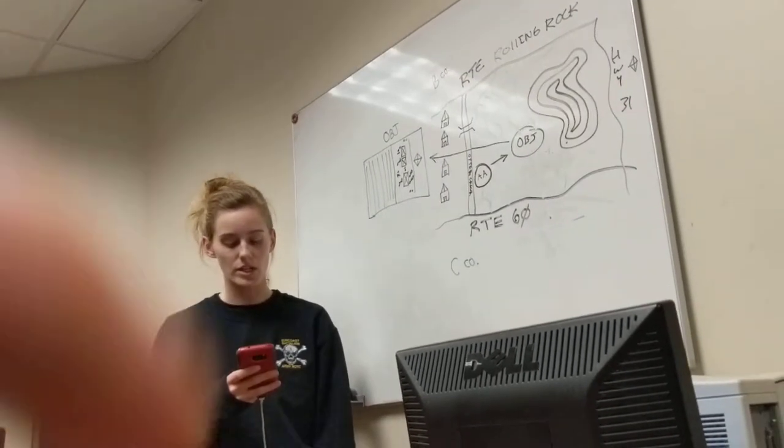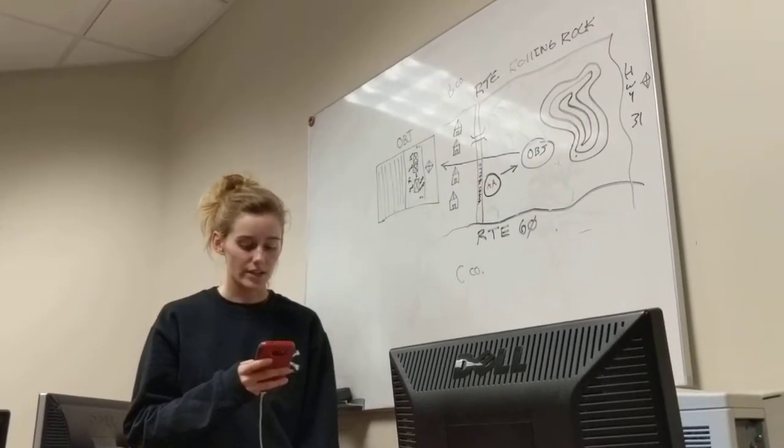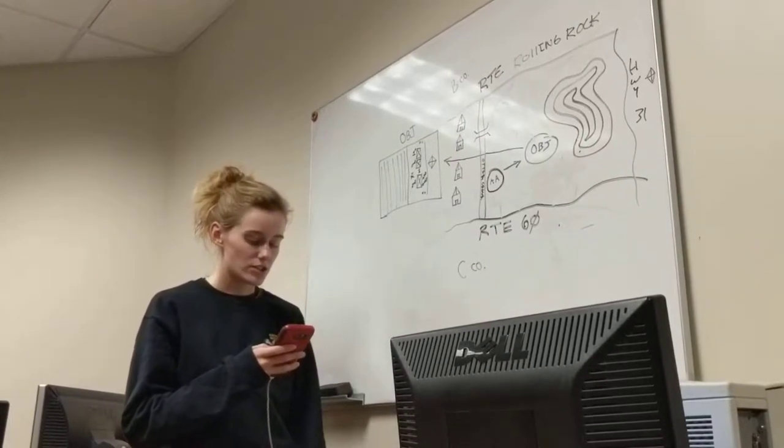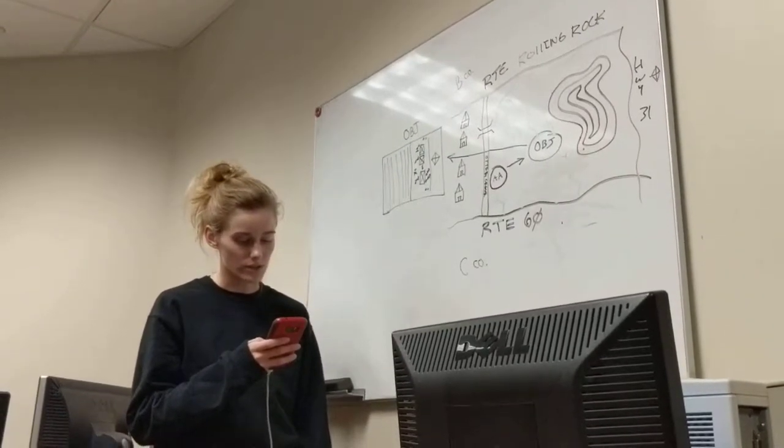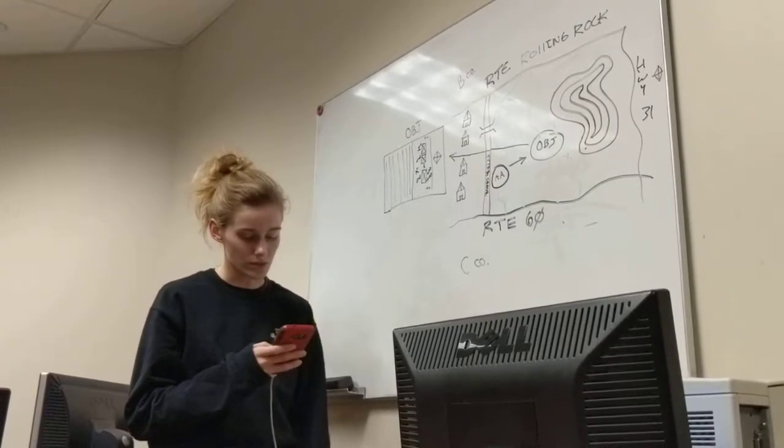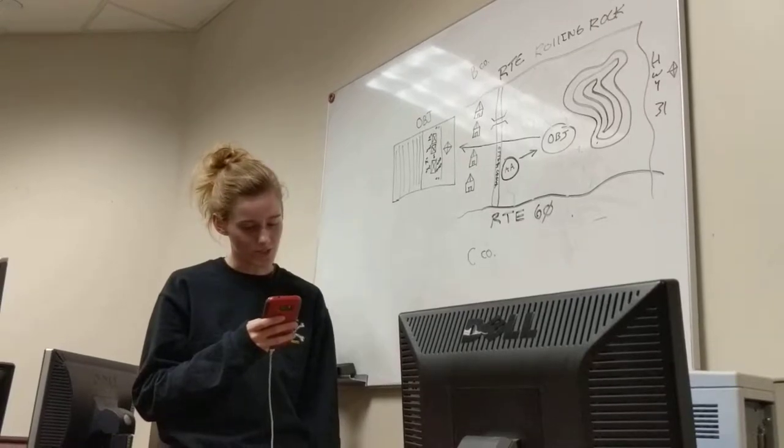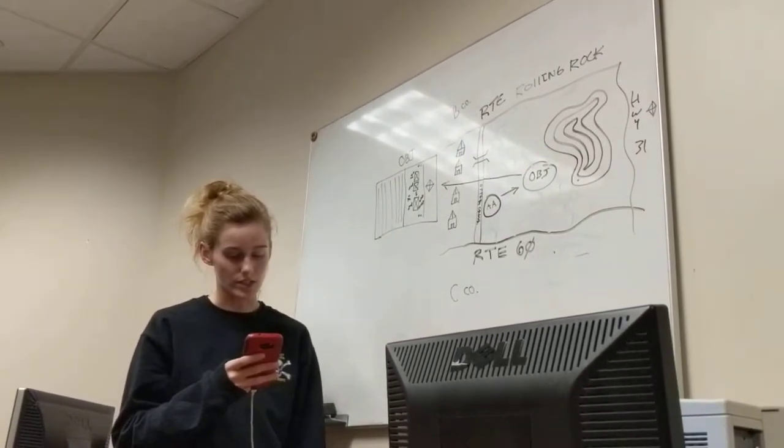Our battalion and company mission. Alpha Company attacks Aryan army forces in AO Alpha at DTG 312100 Romeo January 19. IOT destroy Aryan mortar teams and protect friendly forces.